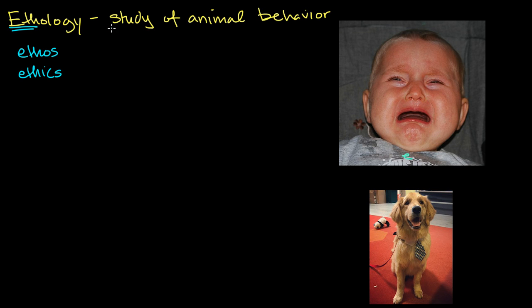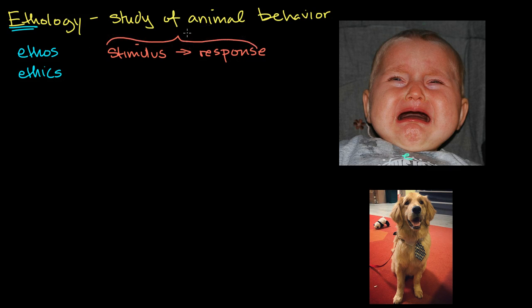Let's first think of a framework, and then we're going to try to apply it to different types of animal behaviors that we see. So first, what is behavior? Well, you have some type of environmental stimulus, and it evokes some type of a response in the animal. That is a pretty good definition of what behavior actually is — it's some type of response to a stimulus in an environment.